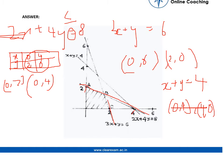Similarly this line has two points 0, 6 and 2, 0 and x plus y is equals to 4 has two points 4, 0 and 0, 4.